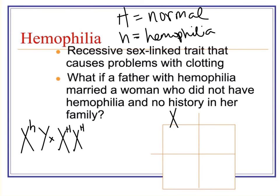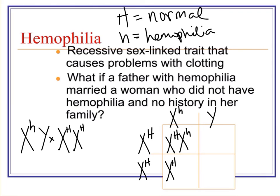If we set up this cross — here's our father who is a hemophiliac, and here's the mother who has no history of it in her family — looking at the daughters first, we can see that all daughters would be carriers for hemophilia, because each daughter receives one X chromosome from dad, and dad only has the recessive allele. Looking at the sons, none of them would have hemophilia because the mom doesn't carry it. With X-linked traits, we start to see a back-and-forth pattern — mother to son to daughter, or father to daughter to son.